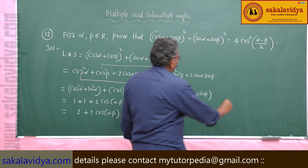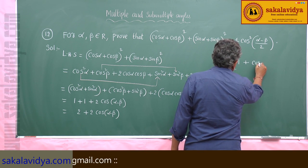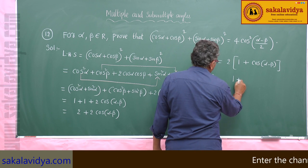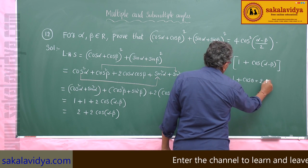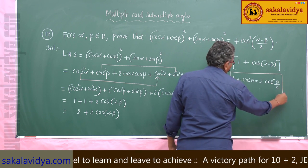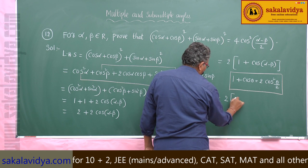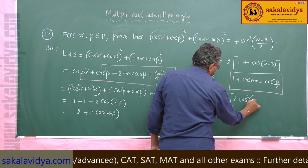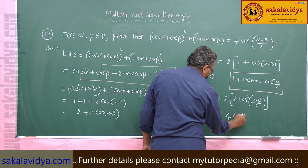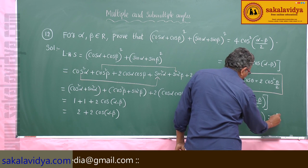Now take 2 as common factor: 2(1 + cos(α - β)). We know the formula 1 + cos θ = 2cos²(θ/2). Applying this gives 2 · 2cos²((α - β)/2) = 4cos²((α - β)/2), which equals the RHS. Hence proved.